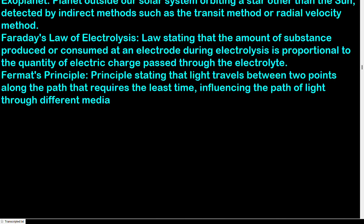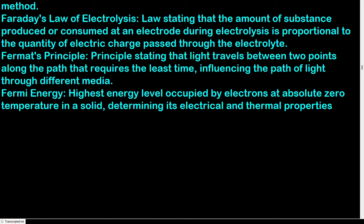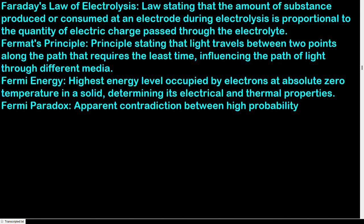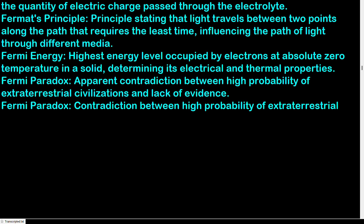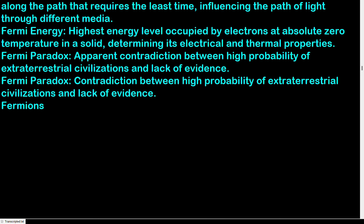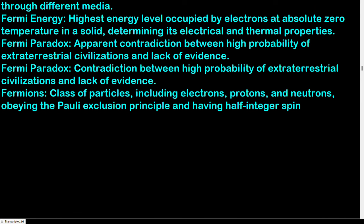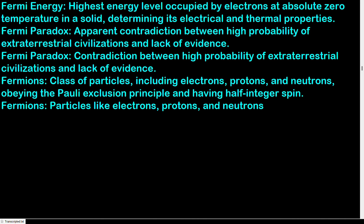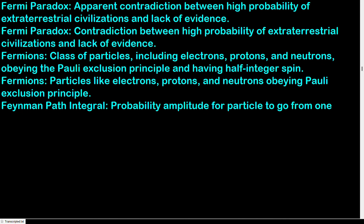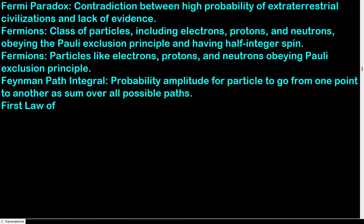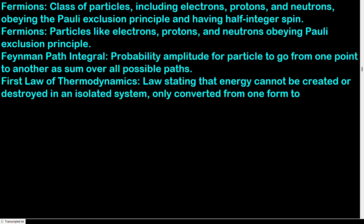Fermi energy: highest energy level occupied by electrons at absolute zero temperature in a solid, determining its electrical and thermal properties. Fermi paradox: apparent contradiction between the high probability of extraterrestrial civilizations and the lack of evidence for them. Fermions: class of particles including electrons, protons, and neutrons, obeying the Pauli exclusion principle and having half-integer spin. Feynman path integral: probability amplitude for a particle to go from one point to another as a sum over all possible paths. First law of thermodynamics: energy cannot be created or destroyed in an isolated system, only converted from one form to another.